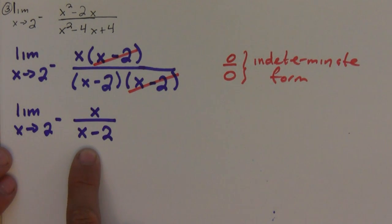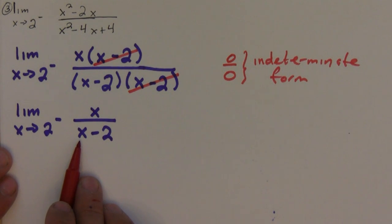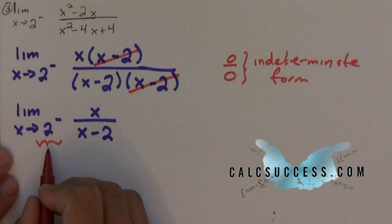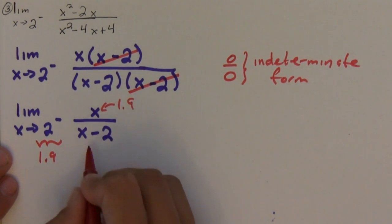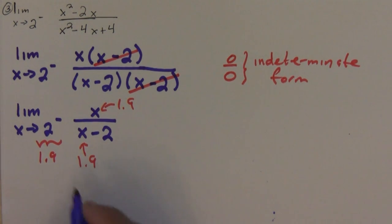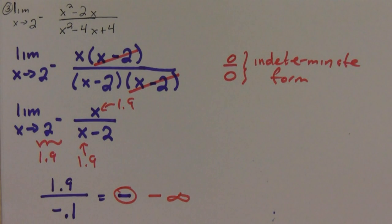Notice that this is a rational function and it's going to have a vertical asymptote at 2, so we're going to have an infinite limit here. Since we're going from the left, we plug in a number close to 2 from the left — say 1.9. So we get 1.9 over 1.9 minus 2, which is negative 0.1. This is a negative number, so the limit goes to negative infinity.